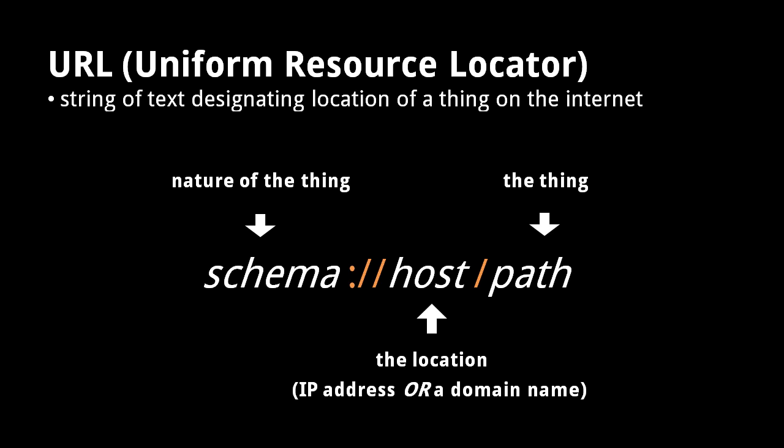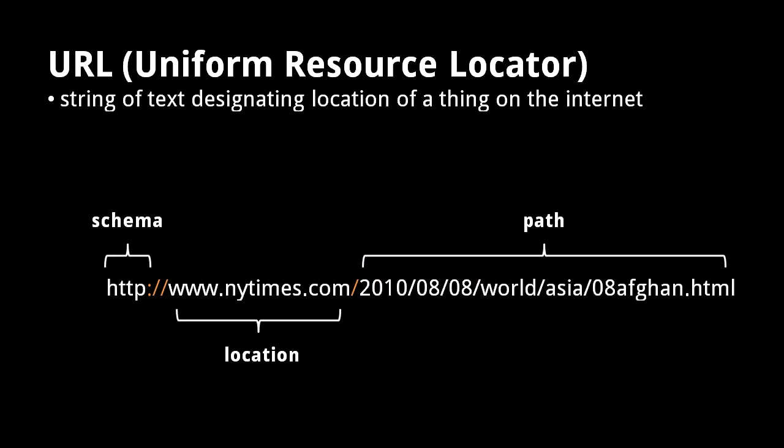In web page URLs, the path often resembles a file path, but the format and the significance of the path is really left entirely up to the server receiving the request for the resource. This example URL denotes the location of a web page at nytimes.com. When your web browser sends a request to the web server at nytimes.com, the path is sent as part of the request, and what resource the path refers to is entirely up to the web server's interpretation.